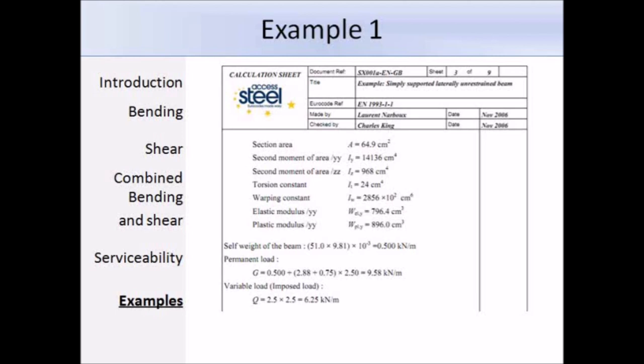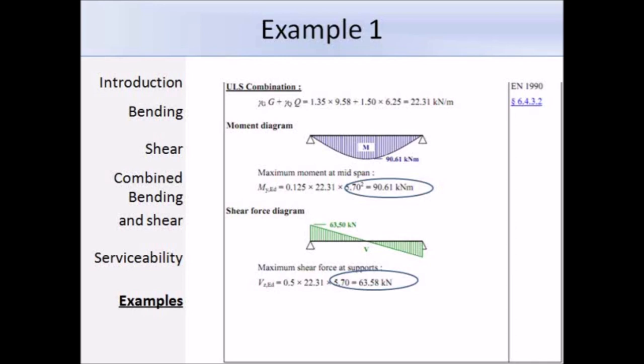Using the loads from the previous slide, the maximum bending moment and shear force can be worked out. The maximum moment occurs at the mid-span, and it's 90.61 kNm, and then the maximum shear force is at the supports, and that works out at 63.58 kN.